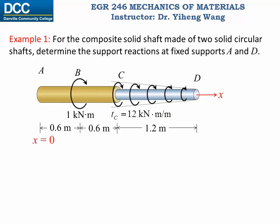With the x-axis set up, I can draw the unknown torque reactions at the fixed supports point A and point D. I draw both of them to be counterclockwise about the x-axis, which is positive torque according to the sign convention. Between point C and D we have a distributed torque loading with a linear load intensity varying from 12 kNm/m at point C to 0 at point D. We need to find the resultant torque of this distributed loading.